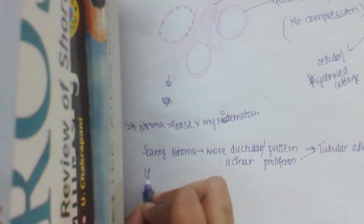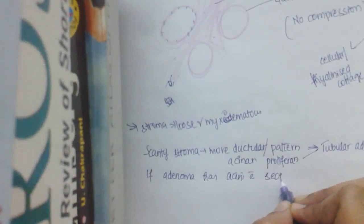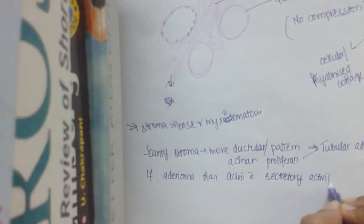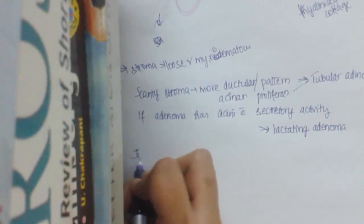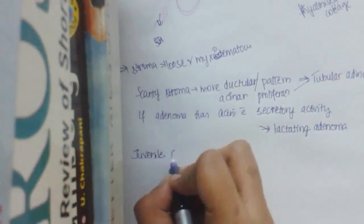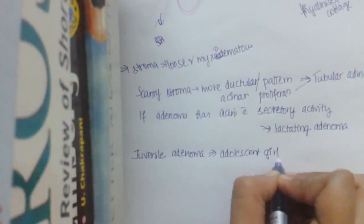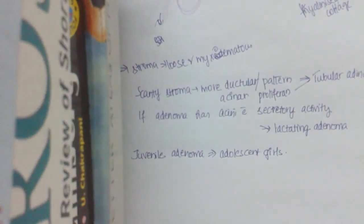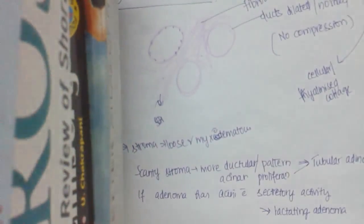If this adenoma has acinar pattern with secretory activity, it is called a lactating adenoma. Juvenile adenoma, as the name says, occurs in adolescent girls and is a larger, rapidly growing tumor. That covers fibroadenoma in detail. In the next class we will learn about the phyllodes tumor and other benign tumors of the breast.